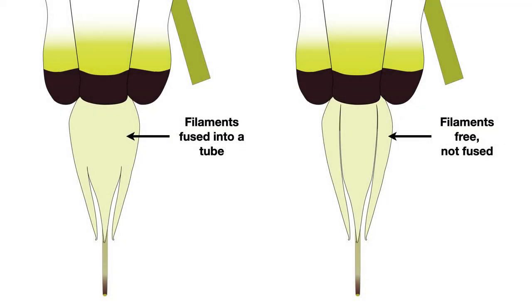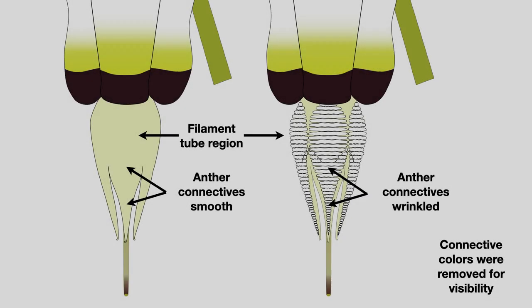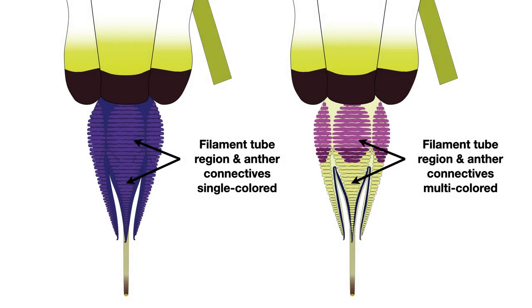Are the filament bases free, or fused into a tube? If fused, how long and wide is that tube? Measure multiple flowers to get a feel for the character. Are the anther connectives smooth (two species) or wrinkled (six species)? What color are the filament tube regions and anther connectives? Are they single colored or multicolored?